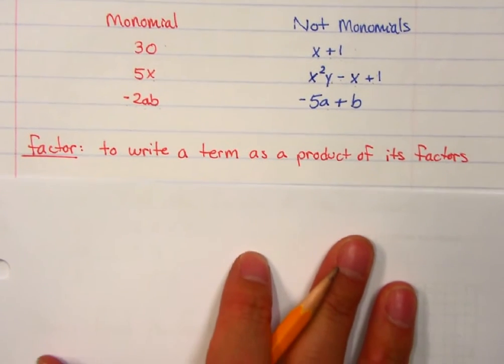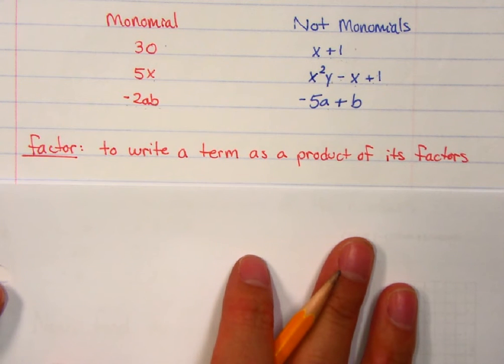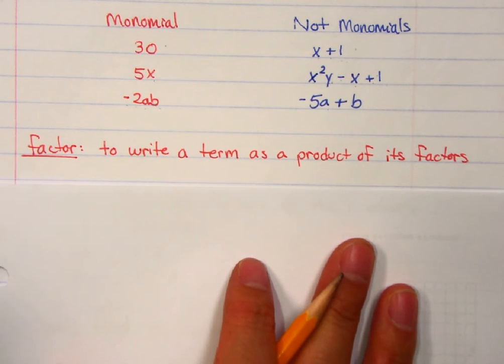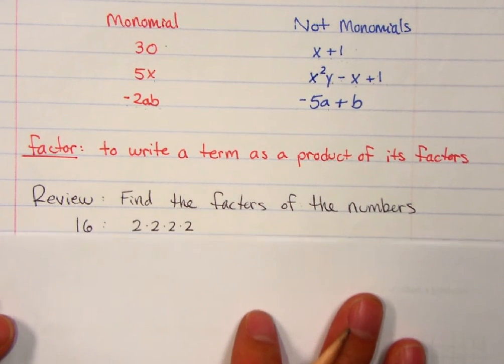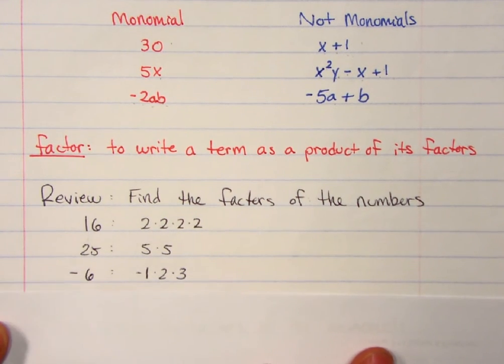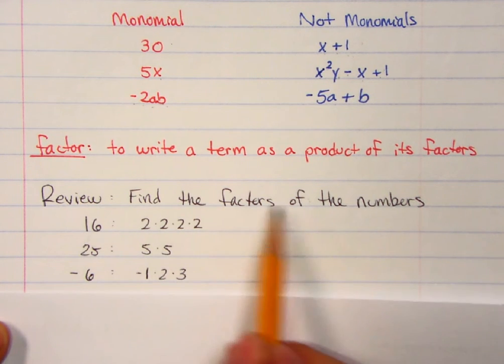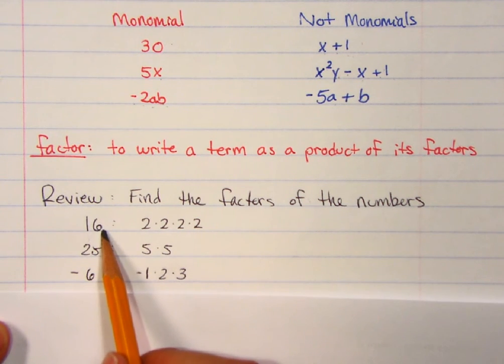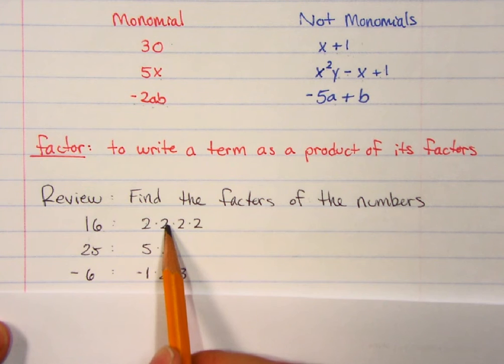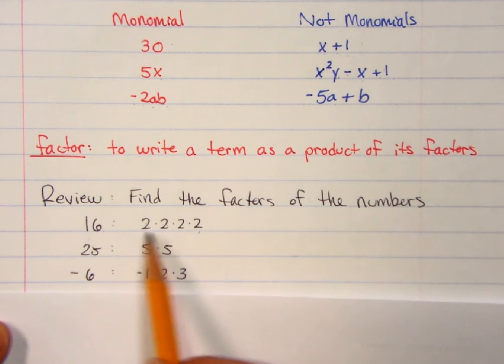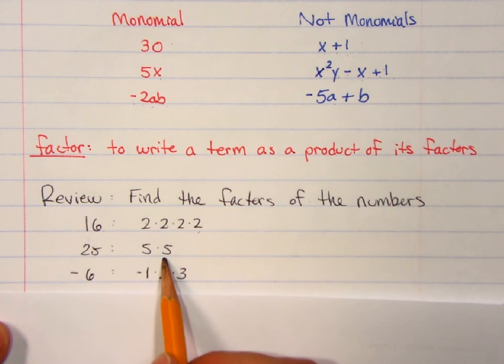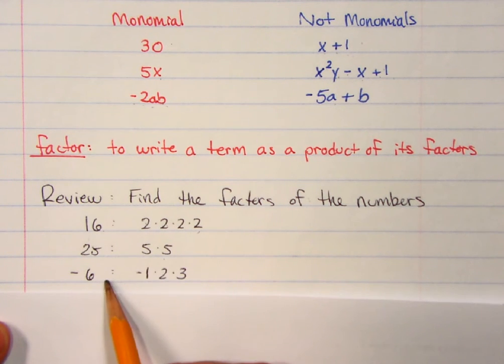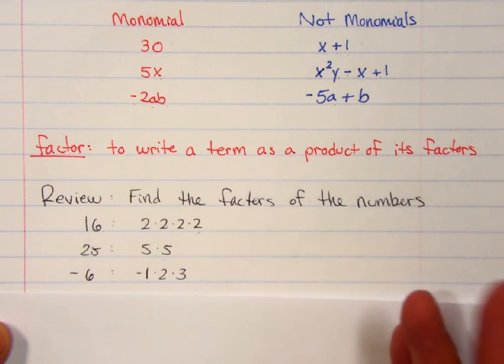Factor. Word factor means to write a term as a product of its factors. To factor something is to break it up into its smaller pieces. We've learned this one already. So let's review. Maybe we've done some prime factorization in the past, right? We'll find the factors of the numbers. 16, that's made up of 2 times 2, which is 4, times 2 is 8, times 2 is 16. So those are the factors of 16. 25, that's 5 times 5. Negative 6, I put the extra negative there, so negative 1, times 2, times 3. Those are all the prime factors of those numbers.